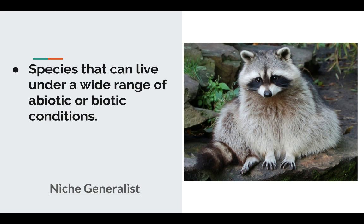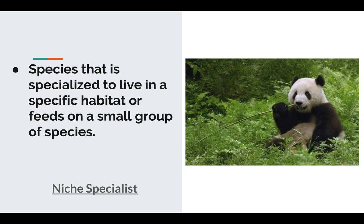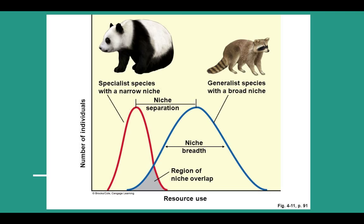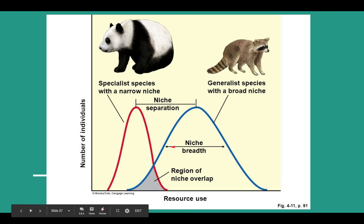There are different types of niches. A generalist, like a raccoon, can essentially live anywhere — it has a wide range of abiotic and biotic conditions it can withstand and will eat almost anything. In the bean lab, the generalist birds were the ones that weren't picky and could eat any bean. A specialist, like the panda, has to live in a specific habitat and usually relies on one source of food. A panda specifically needs bamboo. You can see that the number of individuals for a specialist has very little leeway compared to the raccoon, which can live almost anywhere.